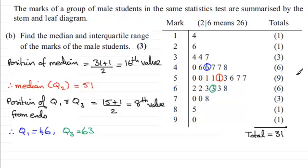So therefore, now we've got our quartiles, we can say that therefore the interquartile range, well, that's equal to the upper quartile Q3 minus the lower quartile Q1, 63 minus 46, which is 17.